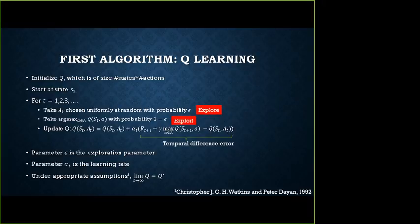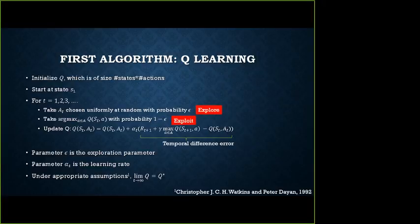This exploration strategy and this update have a few tricks to understand why they make sense. With this exploration and this update, you can show a strong asymptotic convergence: the limit of this estimator Q equals Q* with probability 1. That was shown a long time ago.